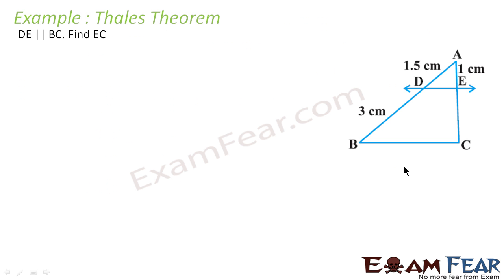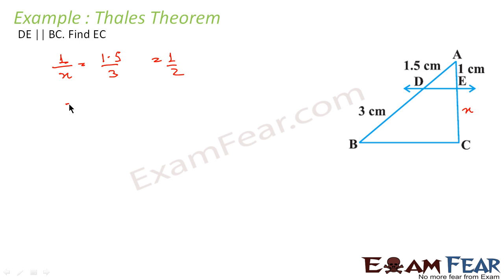Let's take one example — DE is parallel to BC, find EC. This is a very simple application of Thales theorem. DE is parallel to BC is given, so we can apply Thales theorem. Let EC be X. Thales theorem says AD by EC — that is 1 by X — equals BD by DC — that is 1.5 by 3. So 1 by X equals 1.5 by 3, giving X equals 2. Very simple application of Thales theorem.